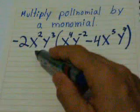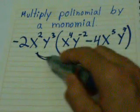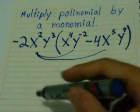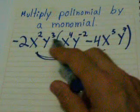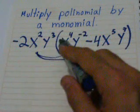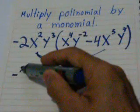This one we times this one and times this one. We times number with numbers and variables with variables. Negative 2 times, when you don't have anything here that means 1, so negative 2 times 1 is negative 2.